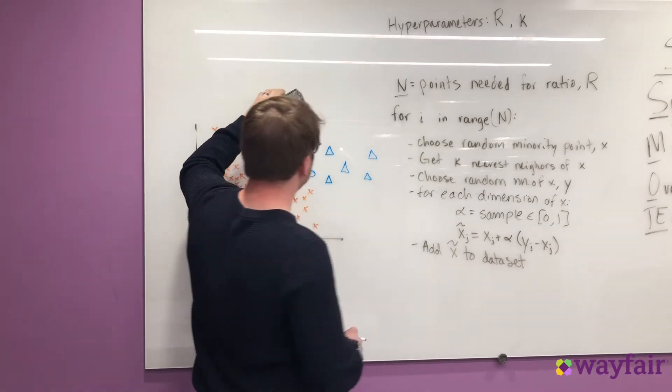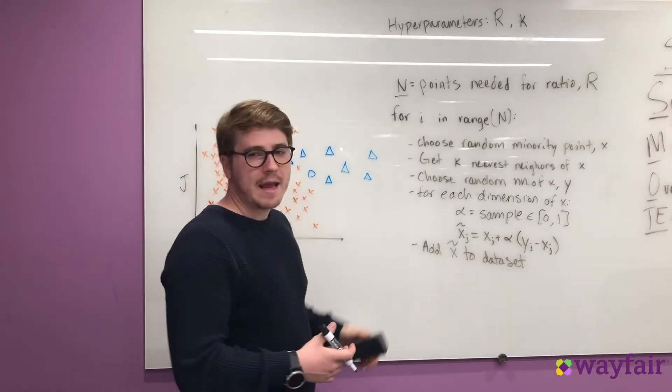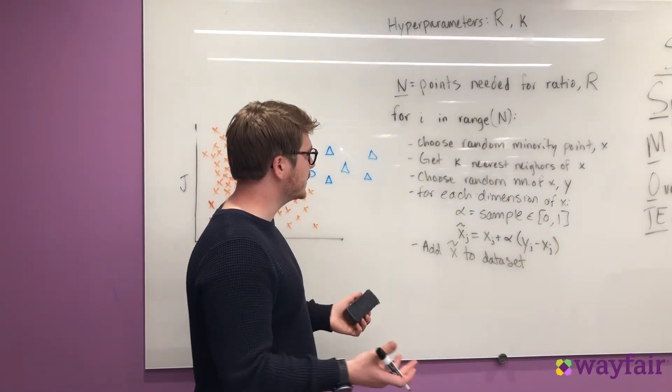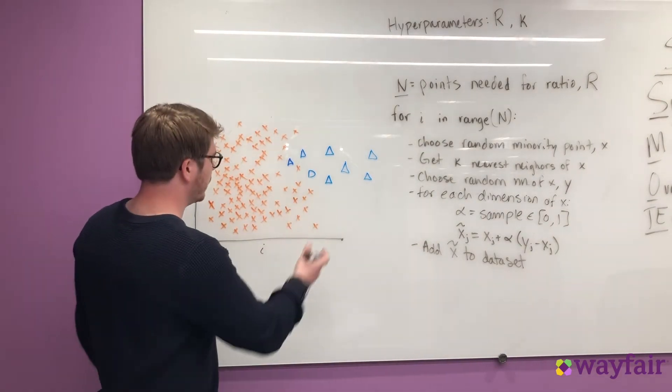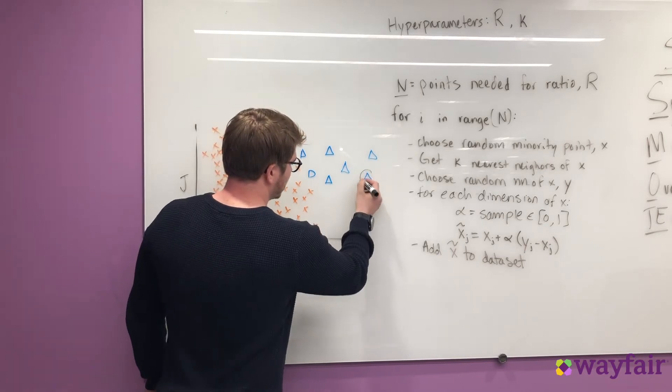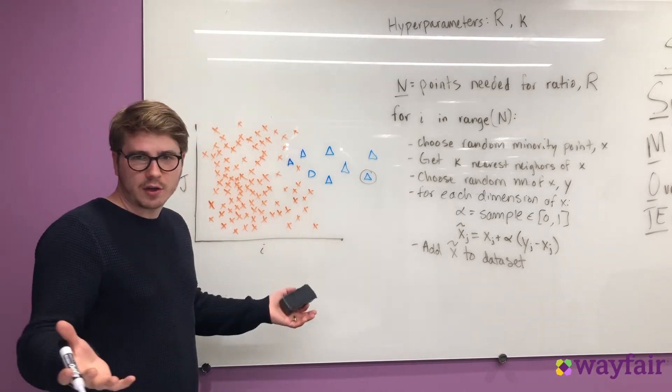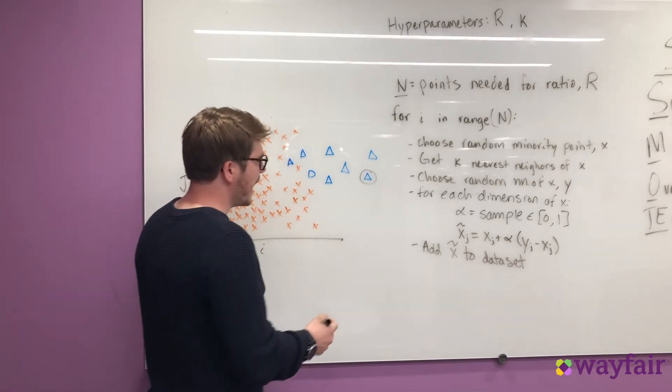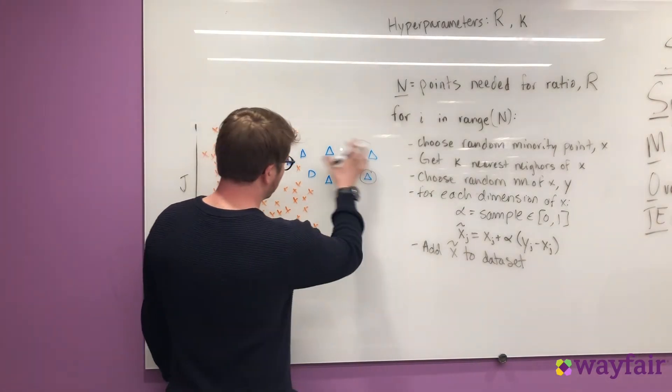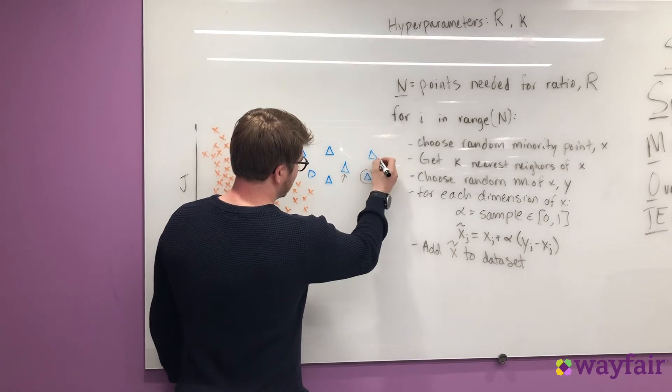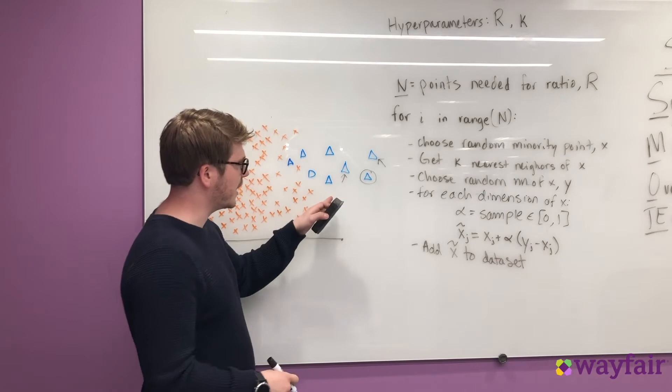Now that we've defined N, which in this case was 99, we're going to iterate through a for loop N many times. And the first thing we do is randomly choose one of our minority case points. So looking at this data set, we can randomly choose this value and set this to X. This is the current point we're interested in. And then we can get the K nearest neighbors of this as set by that hyperparameter. So if we look around at this data point, clearly this and this are nearest neighbors. And let's just assume that K is 2. So we have our two nearest neighbors.